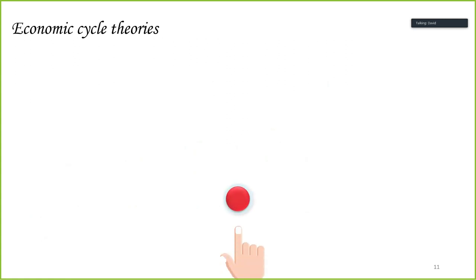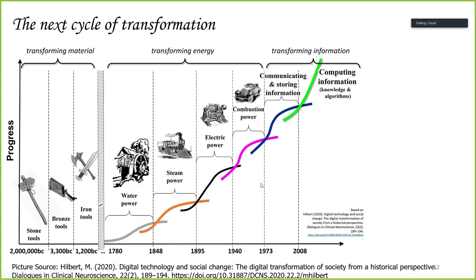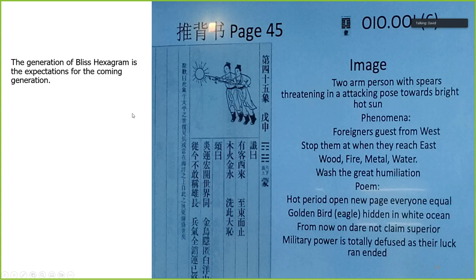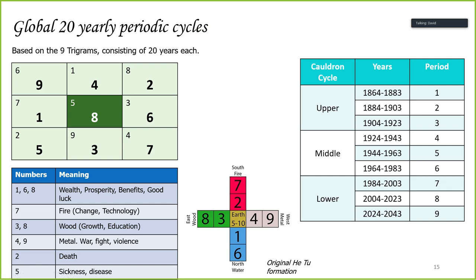We look into the long count from all the averages. From Professor David Koh's sharing, another book is called the Pushback Divination, which also addresses multi-generational outlooks. It publishes the meaning from one hexagram to the other across a 24-year cycle. The cycle we're currently in runs from 1984 all the way to 2043, and next year will be the final year as we move into period number eight.